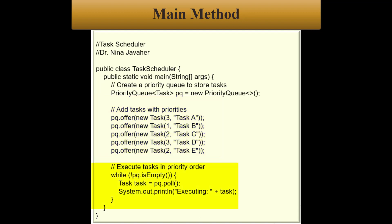And using a while loop, it will check if the priority queue is empty or not. This loop will continue as long as the priority queue is not empty. Inside the loop, the poll method is used to remove and retrieve the task with the highest priority.